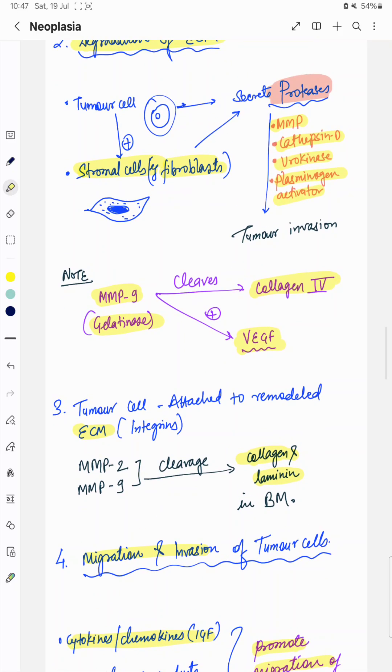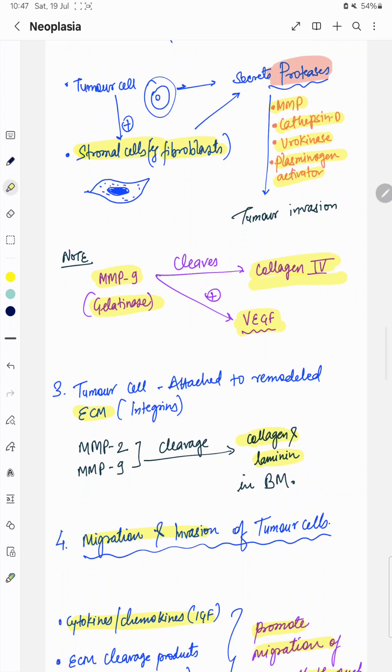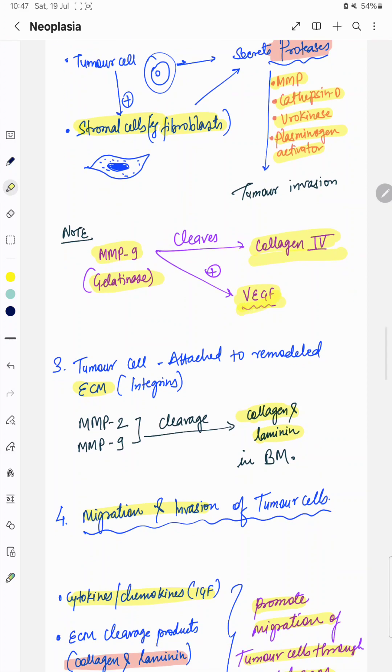MMP-9, also known as gelatinase, cleaves collagen-4 which is present in the basement membrane and also secretes vascular endothelial growth factor.